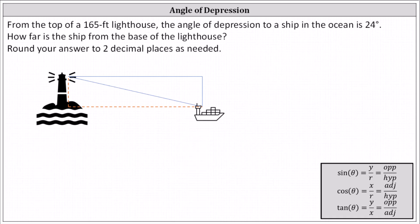From the top of a 165 foot lighthouse, the angle of depression to a ship in the ocean is 24 degrees. How far is the ship from the base of the lighthouse?